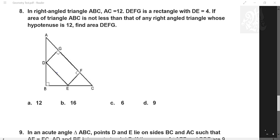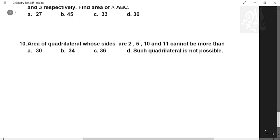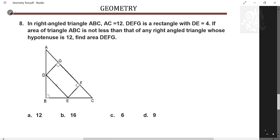Now see. In right angle triangle ABC AC is 12. So hypotenuse is 12. DEFG is a rectangle with DE 4. This is 12. This is 4. Area of triangle ABC is not less than any right angle triangle hypotenuse for 12 degrees. This means this is a 45, 45, 90. Why 45, 45, 90? 45, 45, 90 will have the maximum area. Area is product. Product is greatest when the numbers are same. So this is 12. I get 6 root 2, 6 root 2.